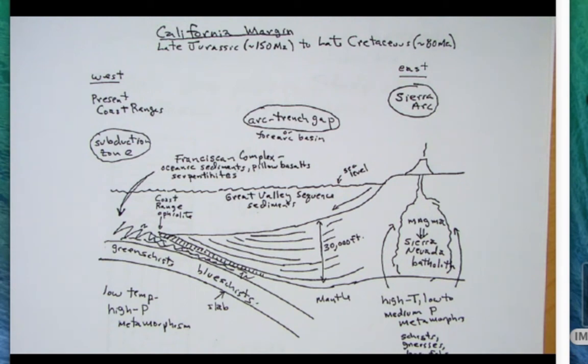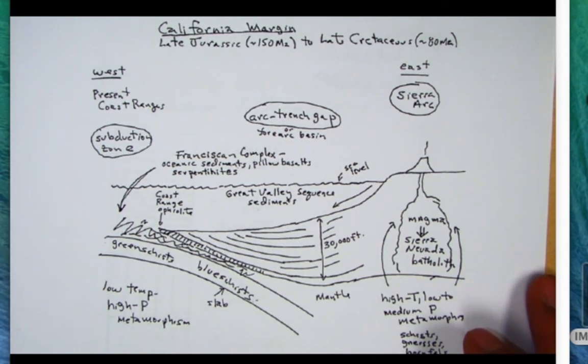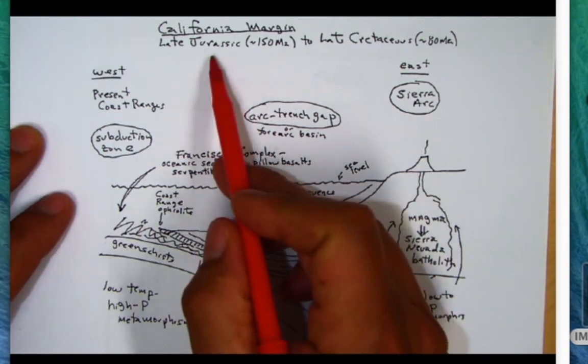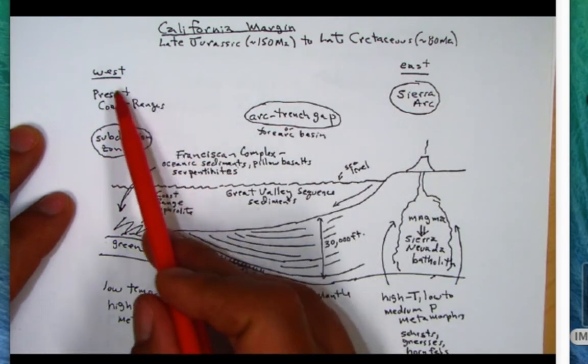This is during late Jurassic to late Cretaceous time. If we look at the profile here, it's a cross-section of Mesozoic California from Jurassic time to Cretaceous time. Note on the west the present Coast Ranges would be here.